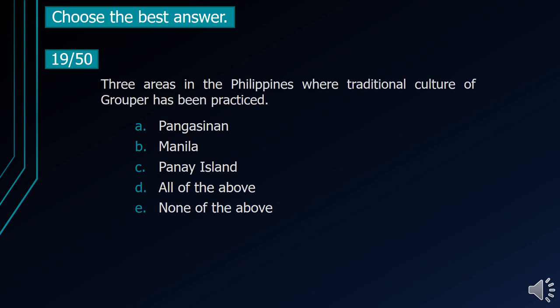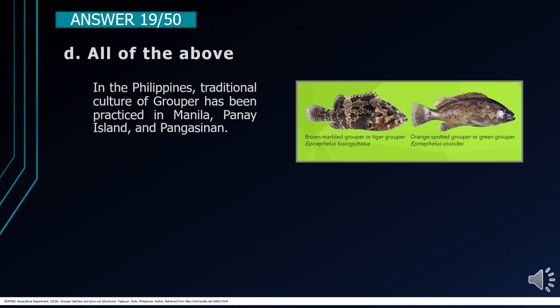Number 19. Three areas in the Philippines where traditional culture of grouper has been practiced. A. Pangasinan. B. Manila. C. Panay Island. D. All of the above. E. None of the above. The correct answer is letter D, All of the above. In the Philippines, traditional culture of grouper has been practiced in Manila, Panay Island, and Pangasinan.